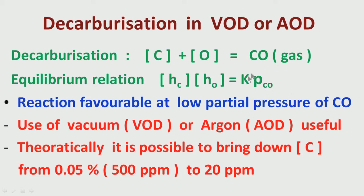This is possible by two ways. If you use vacuum — that is, the vacuum oxygen decarburization process — then the partial pressure of all gases will come down, and in the process the partial pressure of carbon monoxide will also come down. Alternatively, if you use argon, which is called AOD — argon oxygen decarburization — along with oxygen you are putting a lot of argon into the process, and that helps in bringing down the partial pressure of carbon monoxide. So either vacuum or argon are the techniques: if vacuum, the process is called vacuum oxygen decarburization; if argon, we call it argon oxygen decarburization.